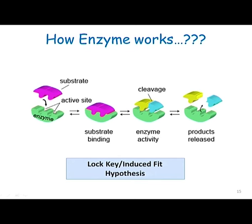An enzyme has ridges or grooves called active sites. On these active sites, substrates come and find a place. Based upon the way they fit onto this enzyme pocket there are two theories. The first is the outdated lock-key hypothesis, which says that the enzyme's active site is rigid like a lock and a substrate is like a key — they are complementary to each other and fit perfectly just like a lock and key.